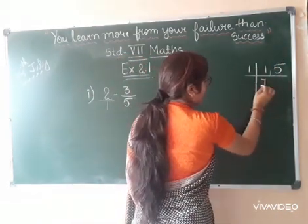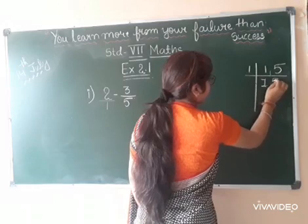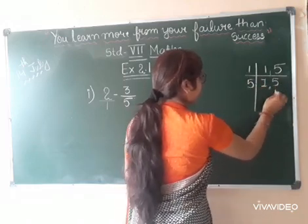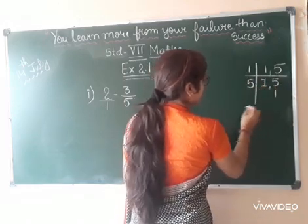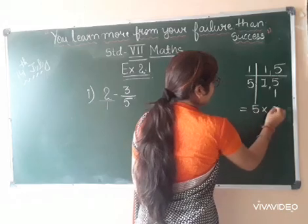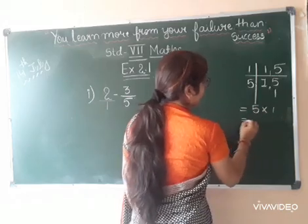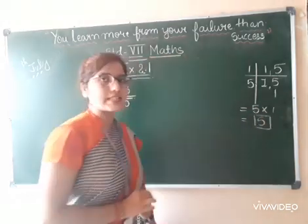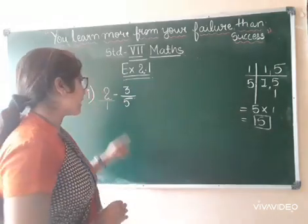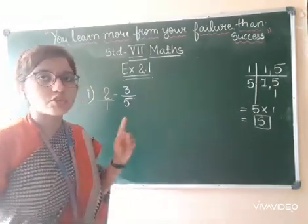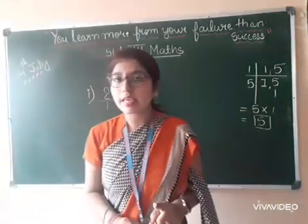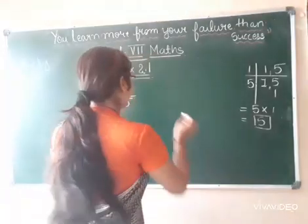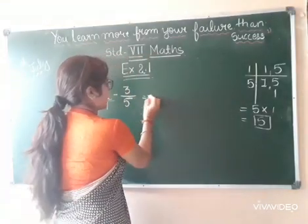1 once is 1; 5 will remain as it is, 5 once is 5. 5 into 1 will give you 5. So what is the LCM? 5. That means in the denominator, which number will you take? You will take 5 to make both denominators equal.